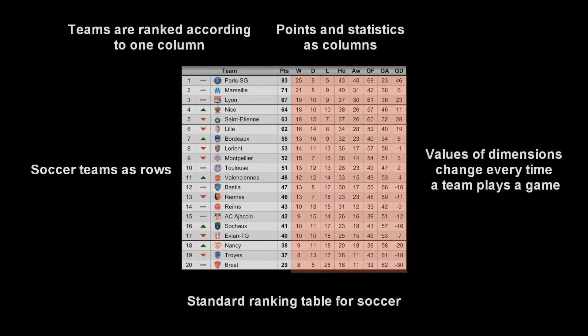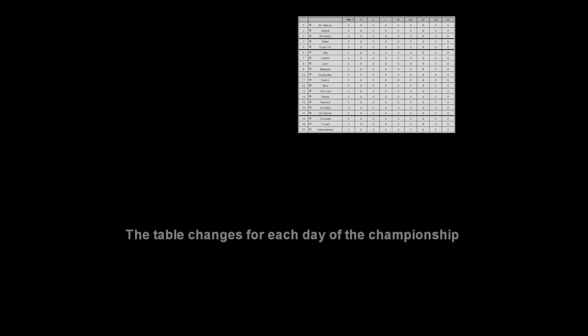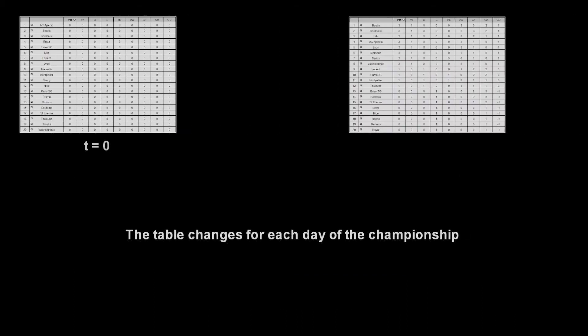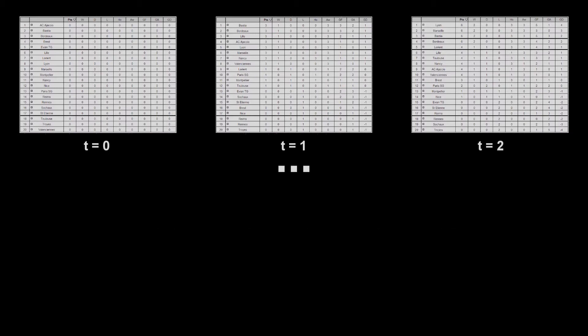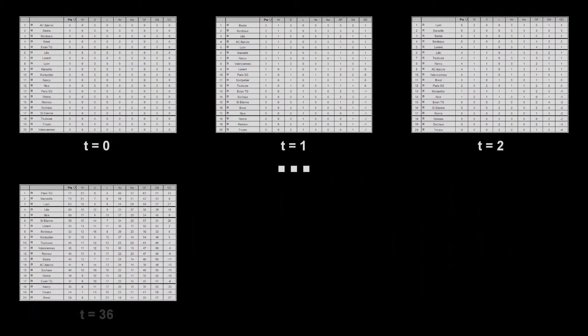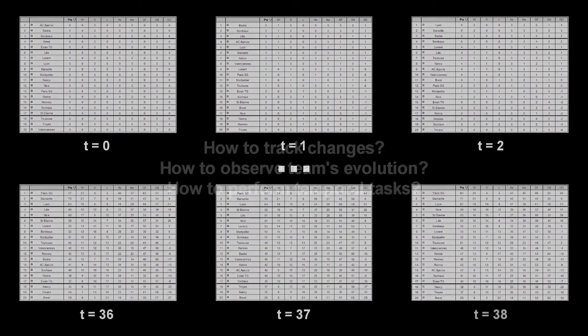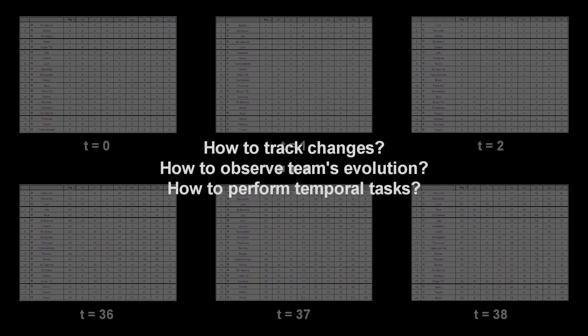In a championship, the values of the dimensions for each team change each time a team plays a game. Thus, the table contents and row ordering change for each day of the championship. Without visual help, it is almost impossible to track changes, observe teams' evolution, or generally perform temporal tasks.